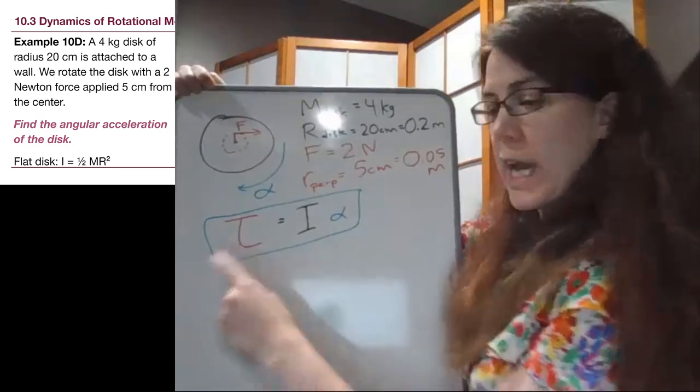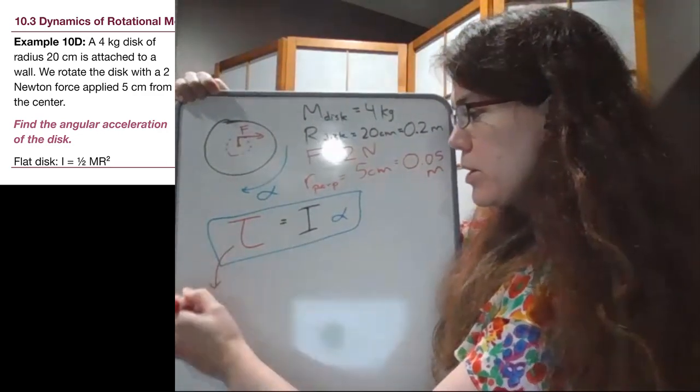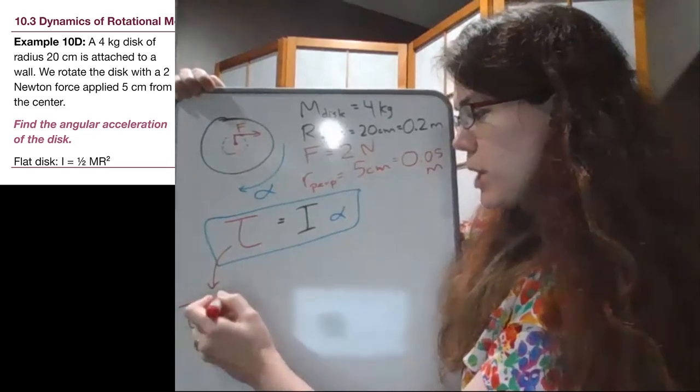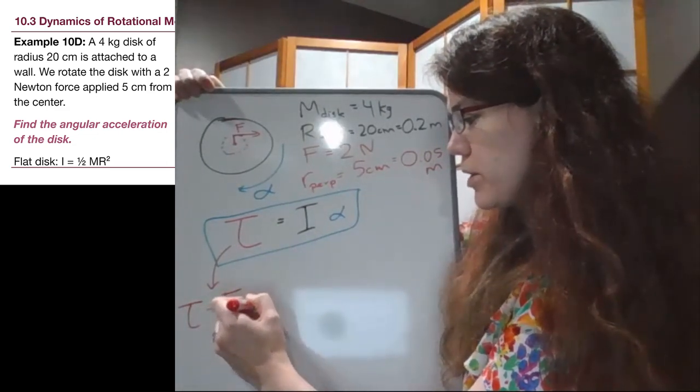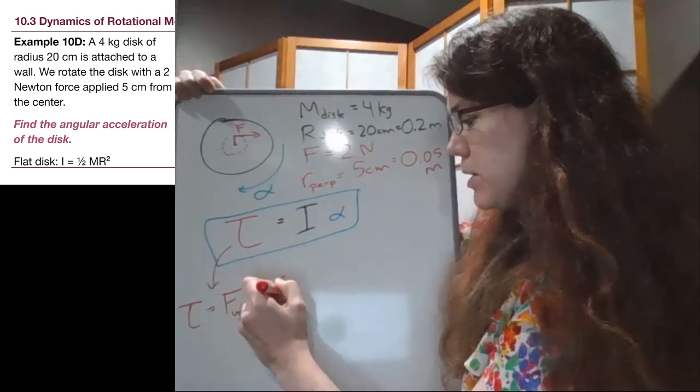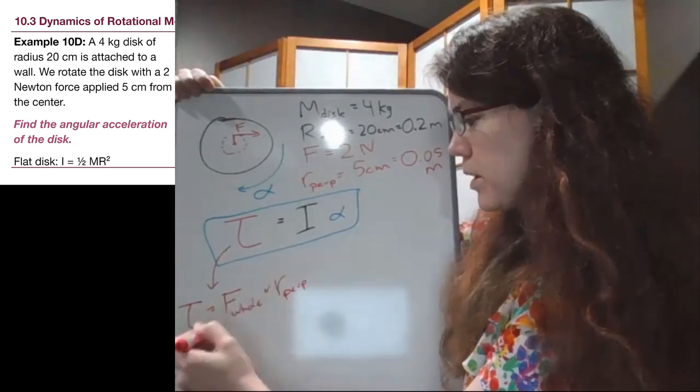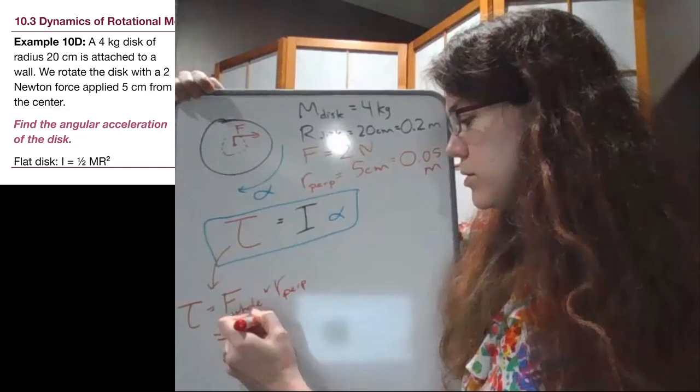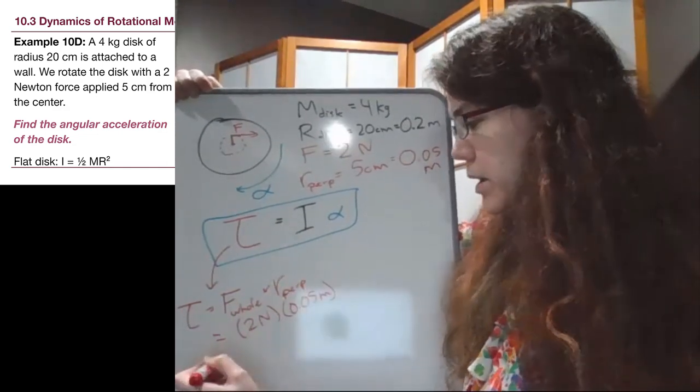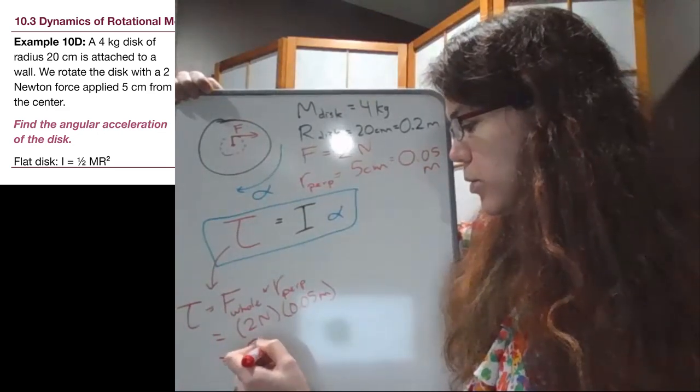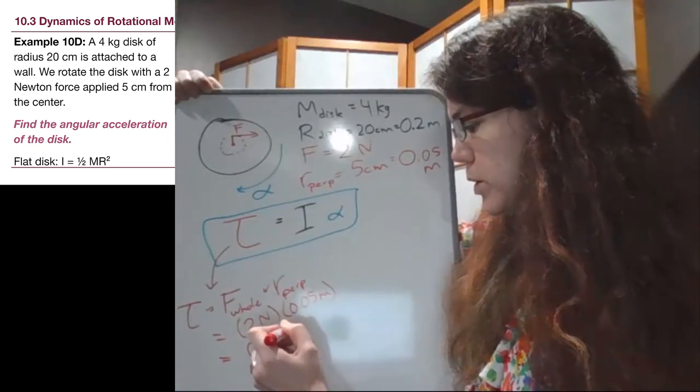So first of all, we have enough information to calculate the torque. The torque, if we think back to chapter 9, is the force, and this time we can take the whole force times the perpendicular distance. And so we have 2 newtons times 0.05 meters, and so we will get 0.1 newton meters.